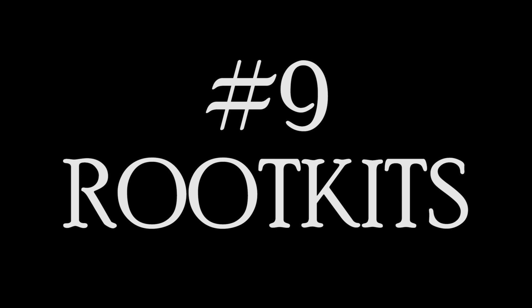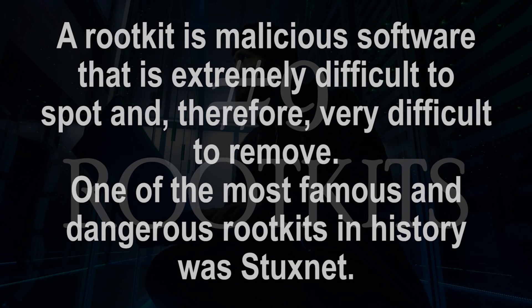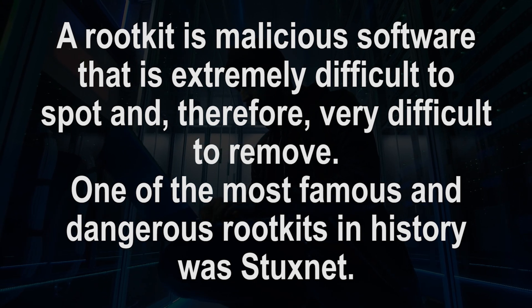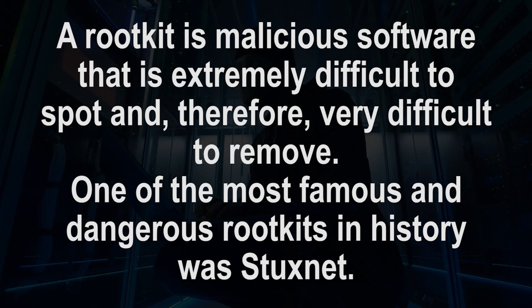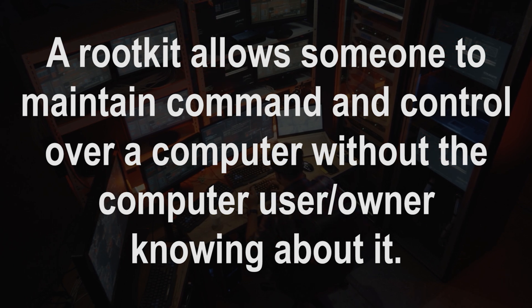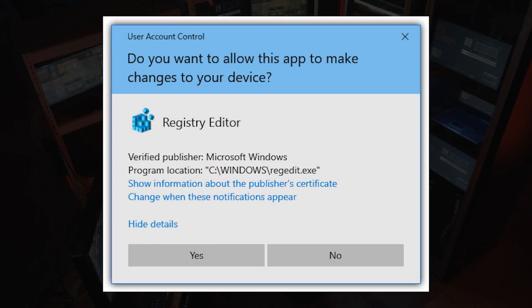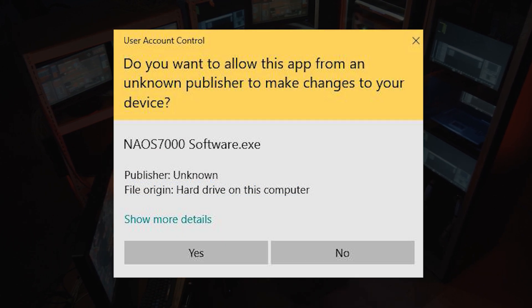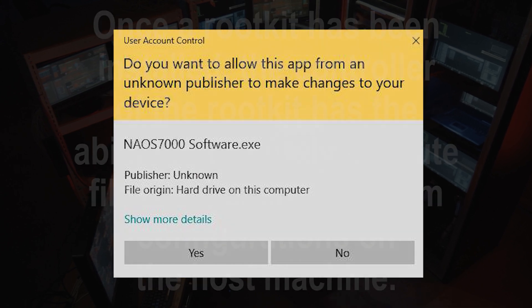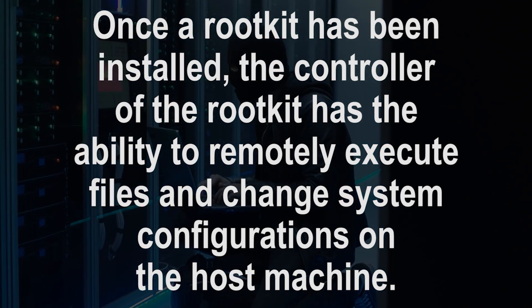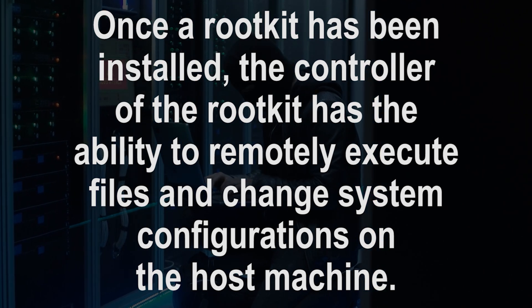Number nine: rootkits. Rootkits are installed inside legitimate software, where they can gain remote control and even administration-level access over an entire system. The hacker will use the rootkit to steal passwords, keys, credentials, and retrieve critical data — not to mention the damage that can be done with root-level access, which is the highest level of access you can have to a computer system. Since rootkits generally hide inside legitimate software, once you allow the program to make changes to your system, the rootkit installs itself and remains dormant until the hacker activates it or it's triggered through a persistence mechanism. Rootkits are commonly spread through email attachments and downloads from insecure websites.